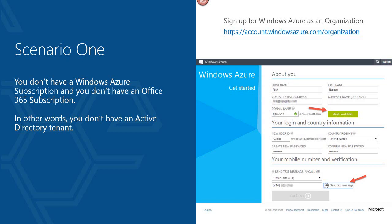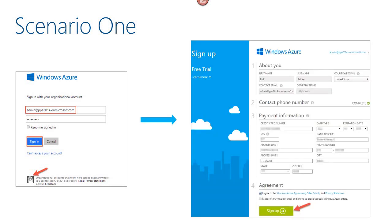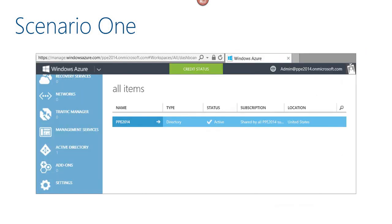The first scenario is the easiest — you have no Windows Azure subscription and no Office 365 subscription. Sign up for Windows Azure as an organization at account.windowsazure.com/organization. The first screen prompts you to pick your domain name and define administrator credentials, which will be an account in your Azure Active Directory. After a mobile verification step, the directory is created. You'll then be challenged to log in using those credentials, enter payment information, and agree to the Azure agreement. Simply click sign up and you have a Windows Azure subscription and Azure Active Directory.